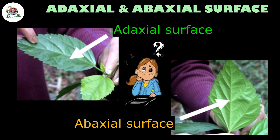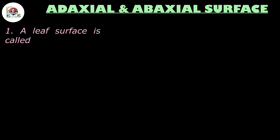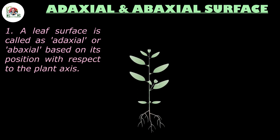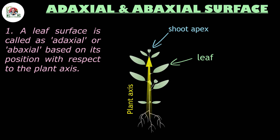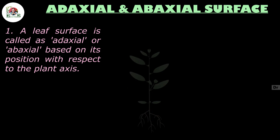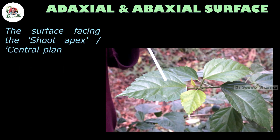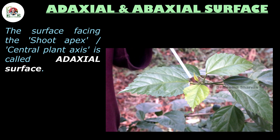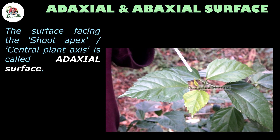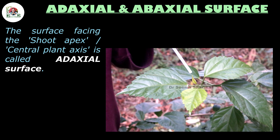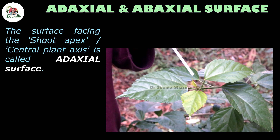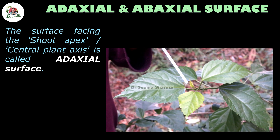Viewers, the first feature is the way the leaf is positioned with respect to the shoot apex or central plant axis. You can see this surface of the leaf is facing towards the shoot apex or the central axis of the plant — thus it is termed as the adaxial surface of the leaf.